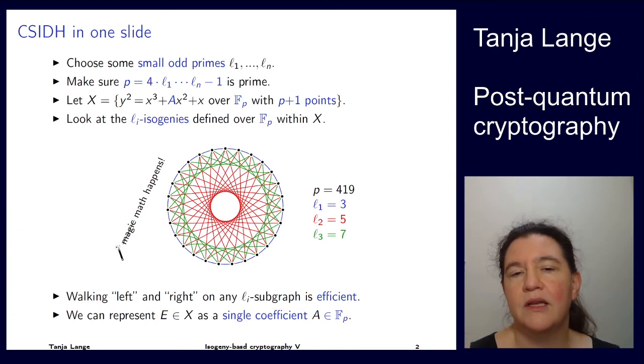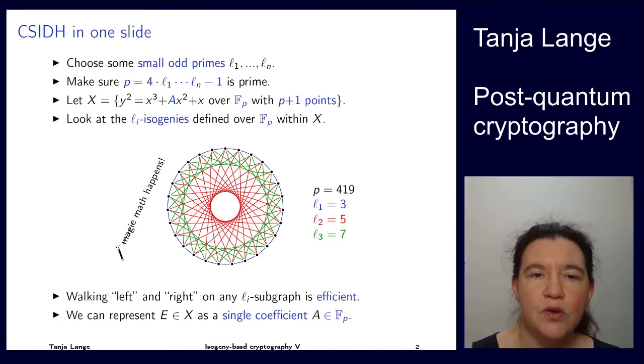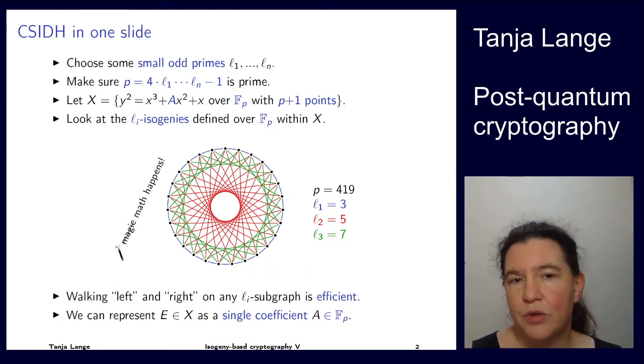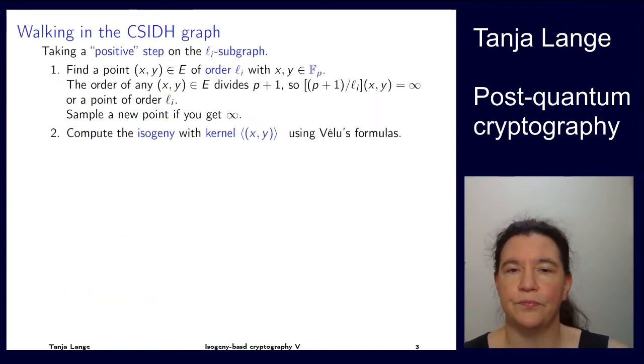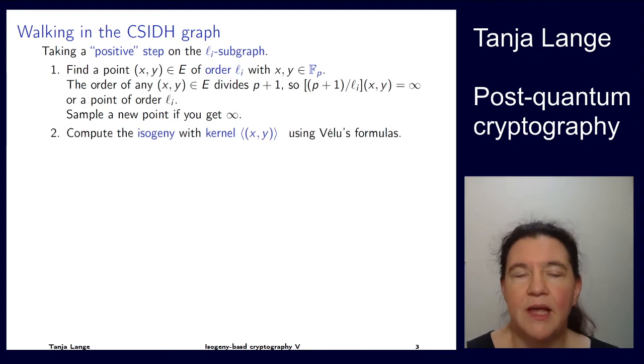Each of the elements that we have in our Diffie-Hellman protocol is just represented by one of these curve coefficients. We have the curve equation y² = x³ + ax² + x, and a is the one part which varies. We can use this a as representation for a group element.